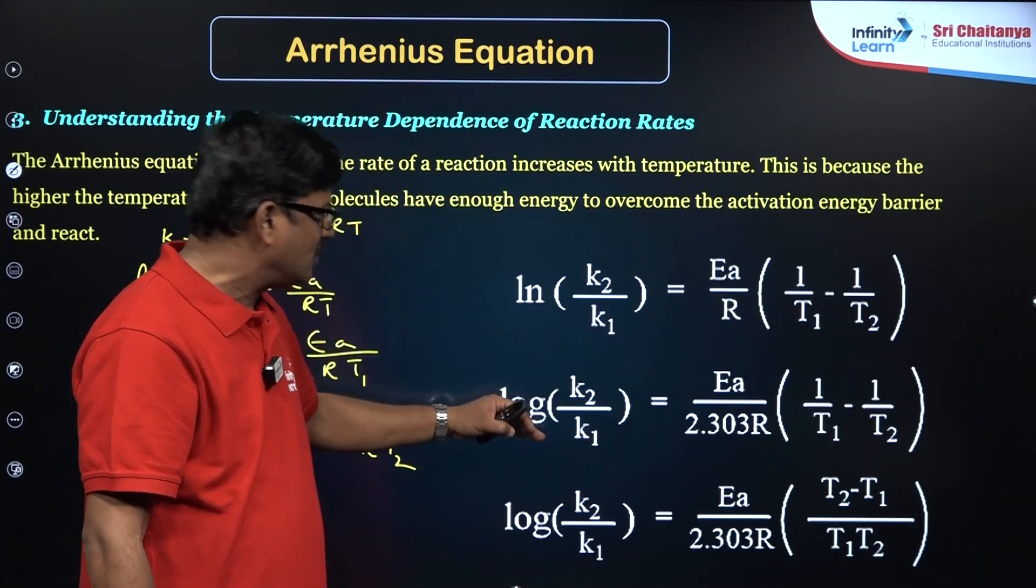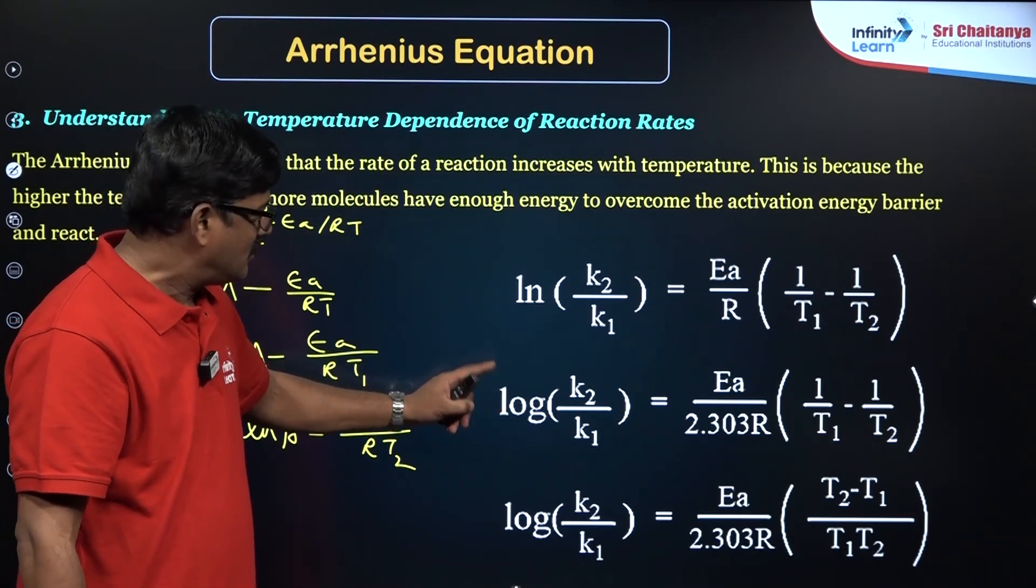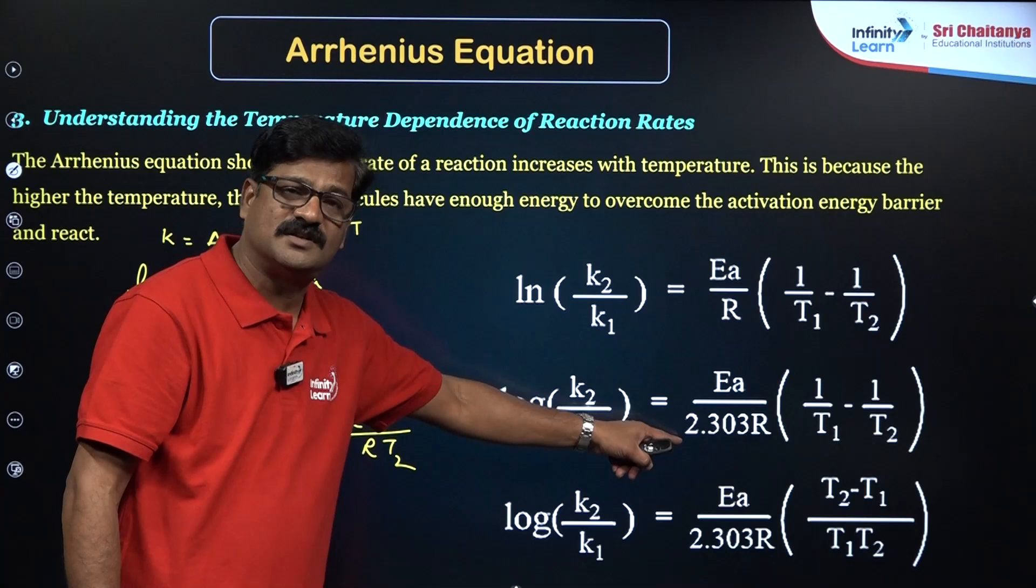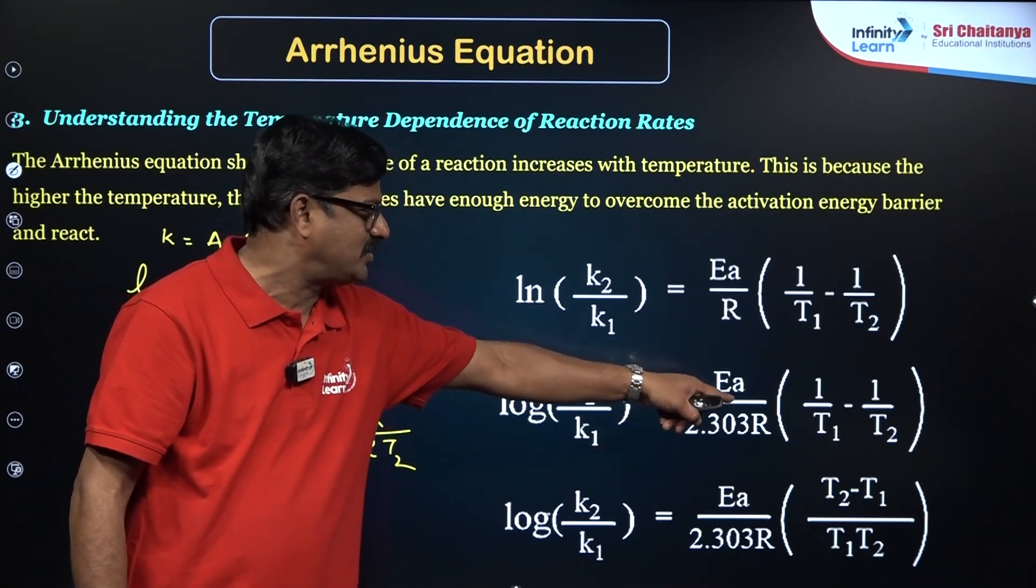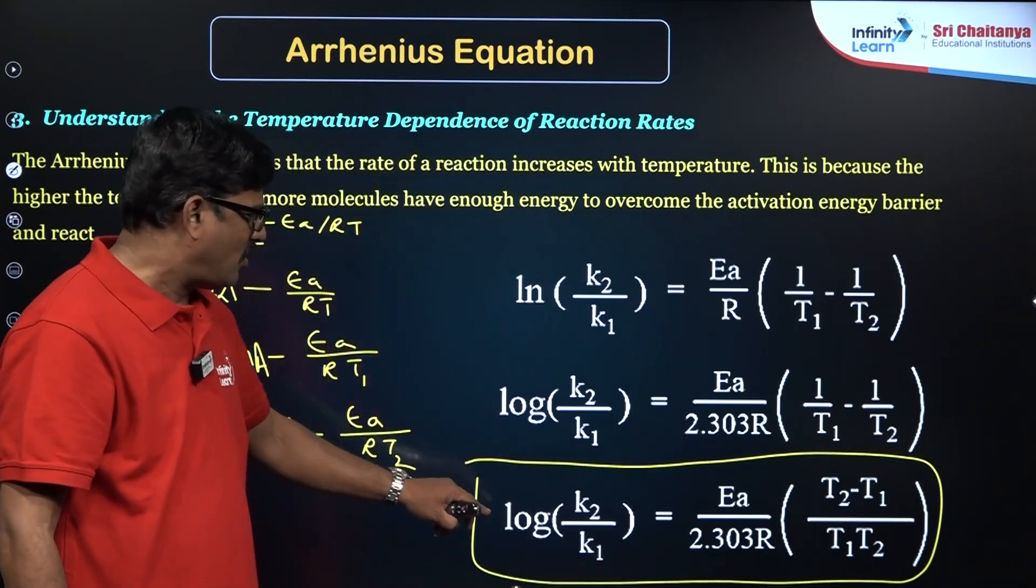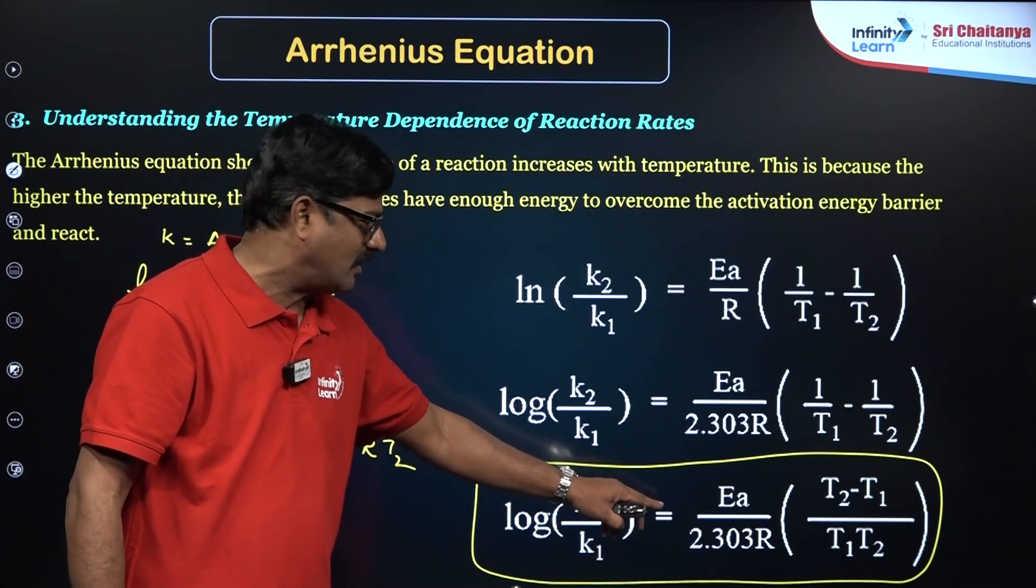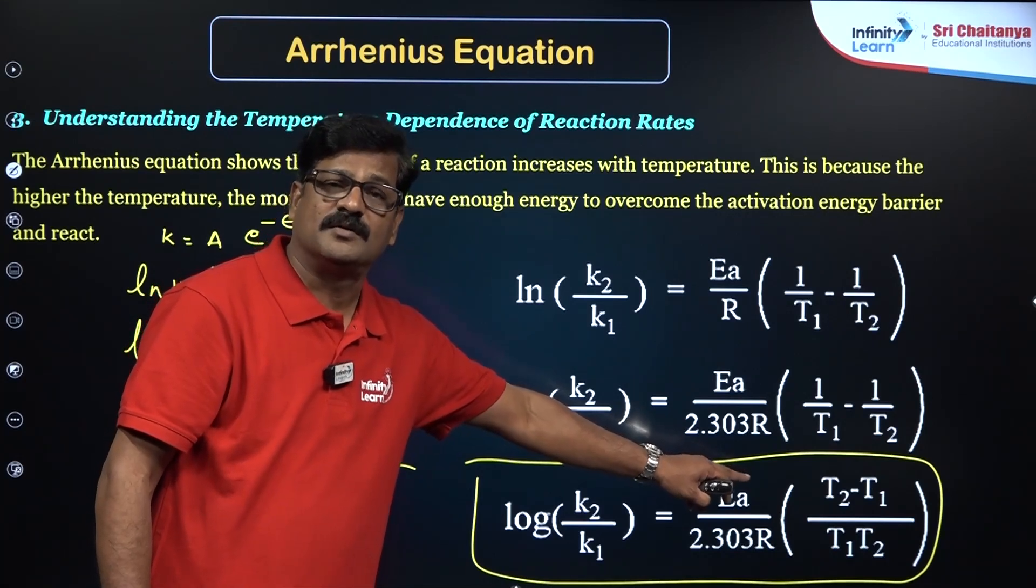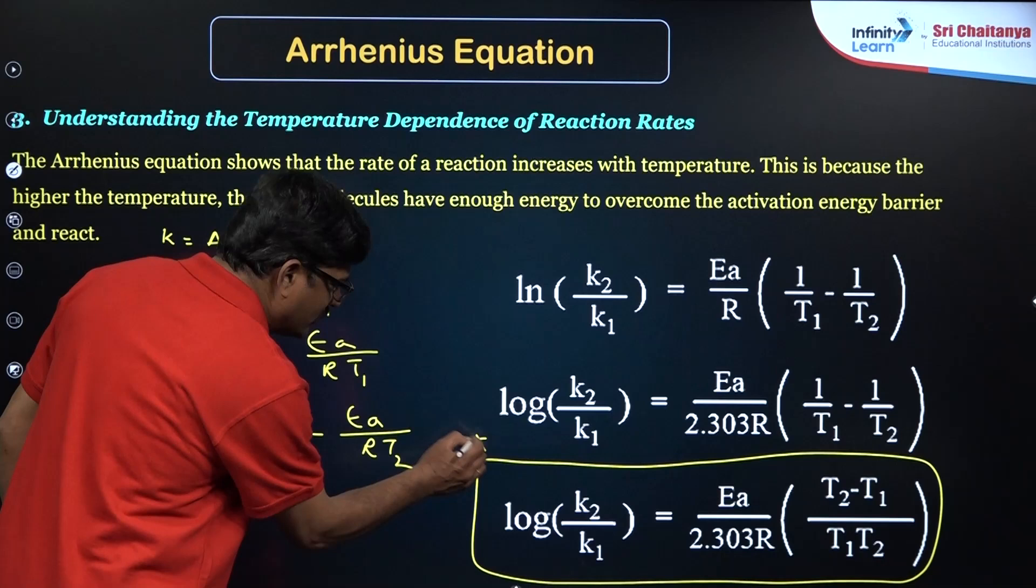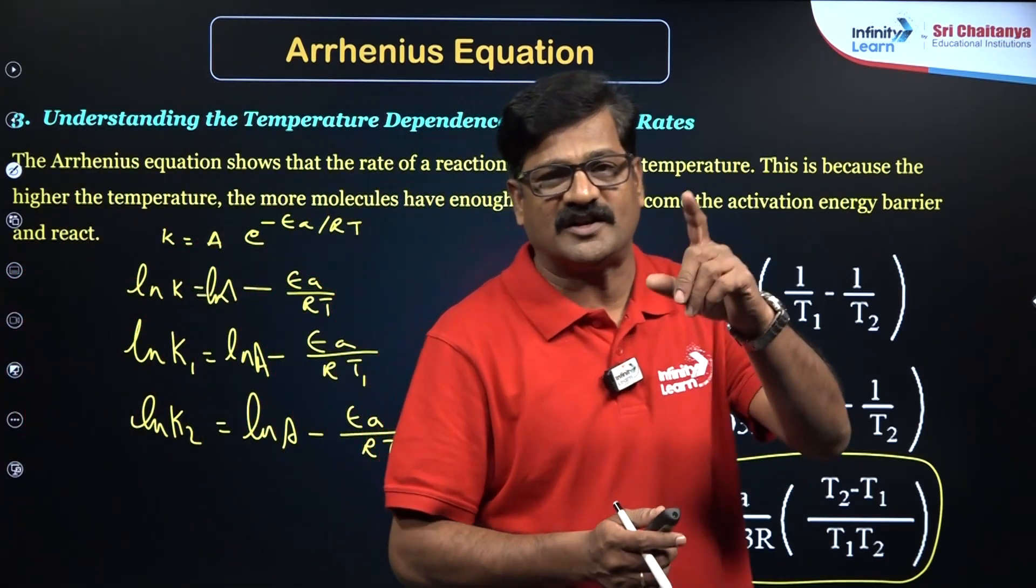On simplification, you can say that the natural logarithm is converted into logarithm to the base 10: log(k2/k1) = (Ea/2.303R) × (1/T1 - 1/T2). Otherwise, you can take it in the simplest way: log(k2/k1) = (Ea/2.303R) × (T2 - T1)/(T1 × T2). So based on this, you are going to expect a question.